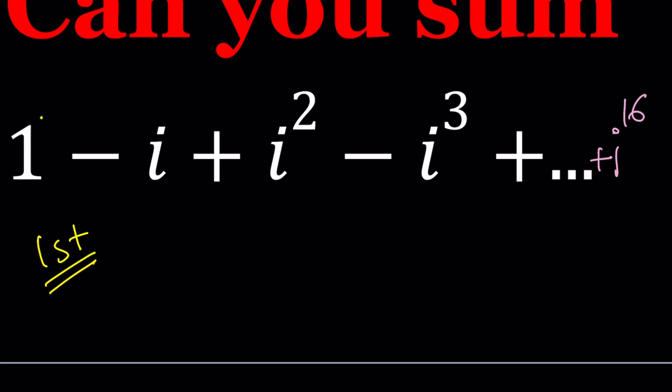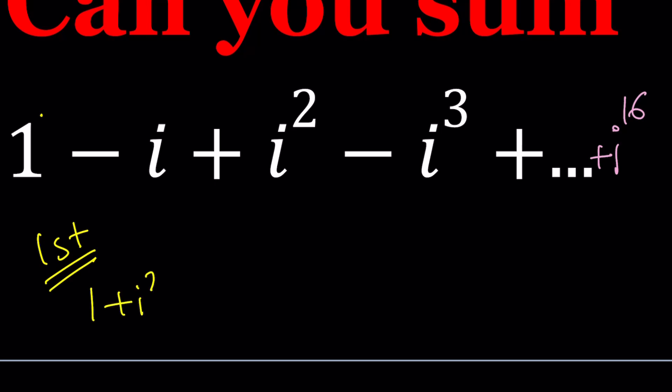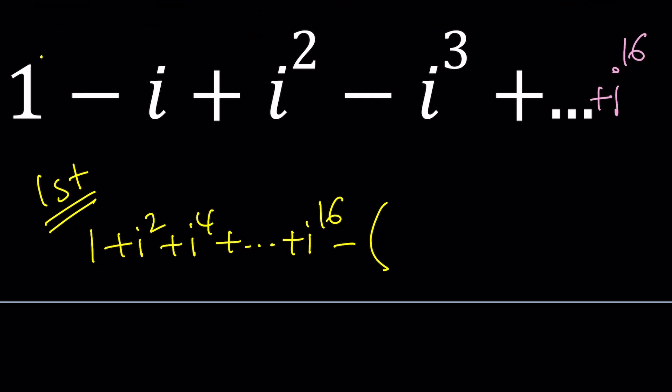So, it's going to look like this. I have one plus i squared plus i to the fourth plus i to the sixth, and this is going to go all the way up. I'm going to stop at i to the power 16. That's the highest power I have, right? And then minus, if I put a negative sign outside the parentheses, then everything inside the parentheses will have a plus sign, because I'm negating it already. So, we're going to have i plus i to the third. This is going to go all the way up to i to the power 15. So, these are going to be skipping powers, goes up by twos. And let's go ahead and find each sum separately.